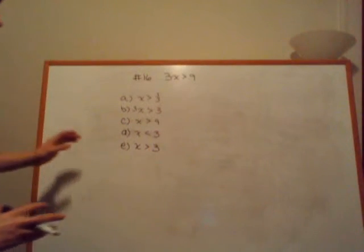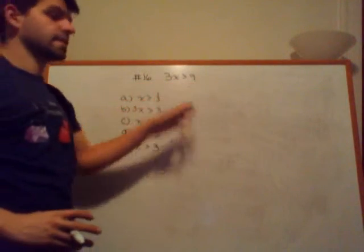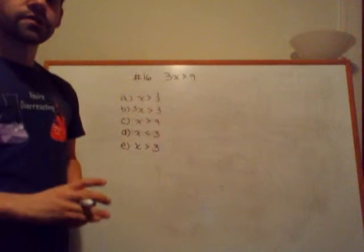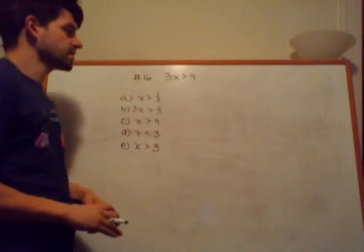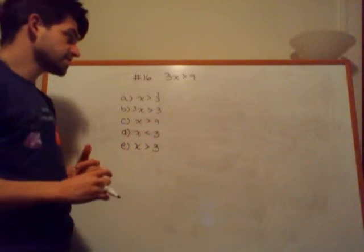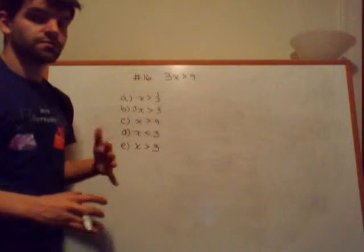So this next question, question number 16, is 3x is greater than 9. The choices are: A, x is greater than 3; B, x is greater than 9; C, x is greater than 3.